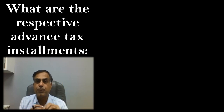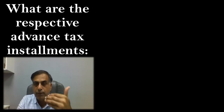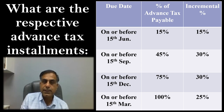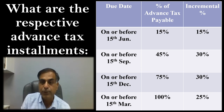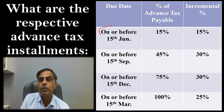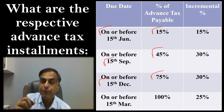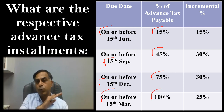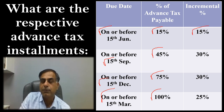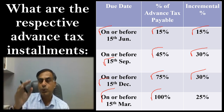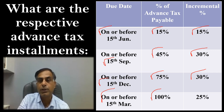If you are liable to pay advance tax, the installment schedule is as follows. On or before 15th June, you must pay 15% in aggregate. On or before 15th September, 45% in aggregate. On or before 15th December, 75% of the net tax payable. And on or before 15th March, the full 100%. In incremental terms: first installment is 15%, second is 30%, third is 30%, and the fourth is 25% of the net tax payable.